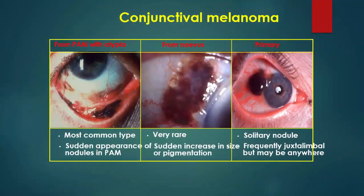Conjunctival melanoma can arise from primary acquired melanosis with atypia — the most common type — with sudden appearance of a nodule. It can arise from a nevus, which is very rare and characterized by sudden increase in size of the pigmentation. Or it arises de novo as a pigmented nodule, usually just limbal but may be anywhere. We can judge whether the mass arises from the conjunctiva or from underlying ocular tissue such as the ciliary body.